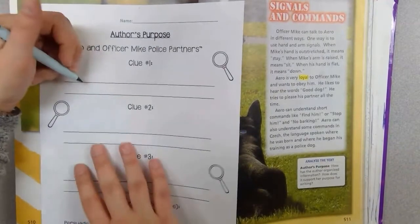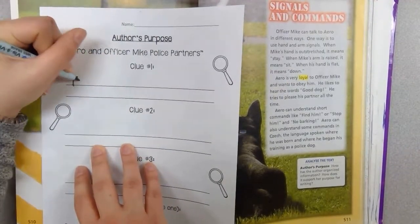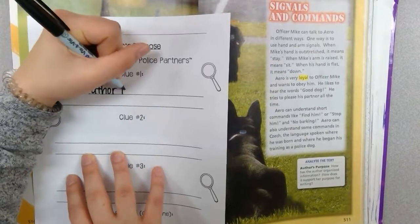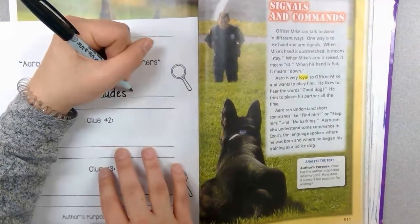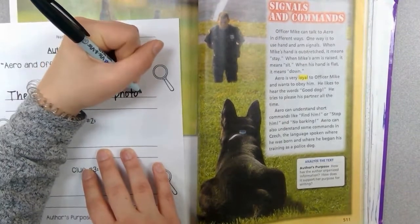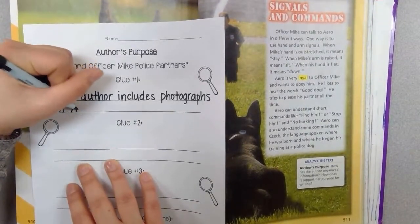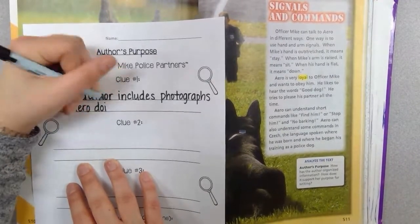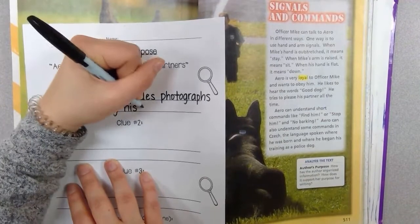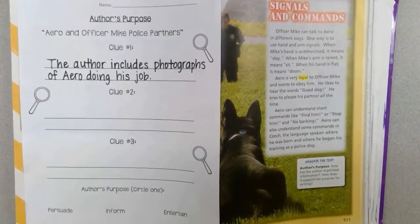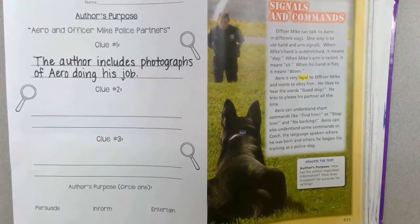For clue number one, and we're going to write — so you're writing with me — the author includes photographs of Arrow doing his job. That's one clue that hints at what the author is trying to tell us through this story. Let's take a little bit more time to finish writing and then we can start looking at clue number two.